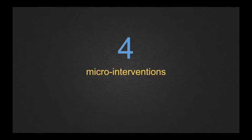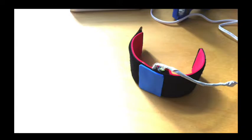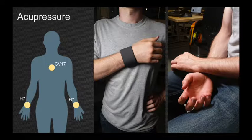We built four prototypes to explore the benefits of micro-interventions in the context of stress. We built a vibro-tactile bracelet with two vibrating motors used for guided breathing and acupressure. The first intervention is acupressure, where three pressure points are used: both wrists and the sternum.